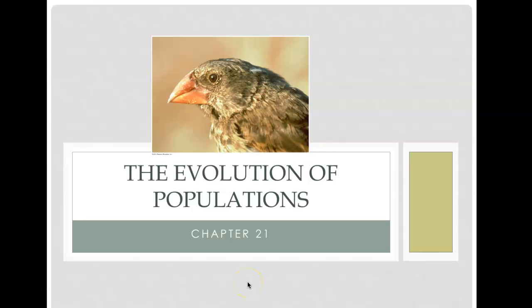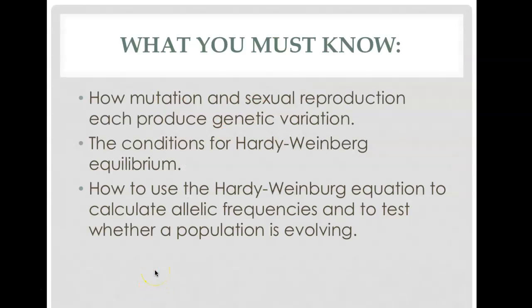Hello, everyone. We are on page 241 in your binder. We are on chapter 21, which is the evolution of populations. The last unit was more of a broad overview of what evolution is and what evidence we have to support it. This unit is another three chapters that will go into more detail, including a bit of math and what it actually means to be a species.